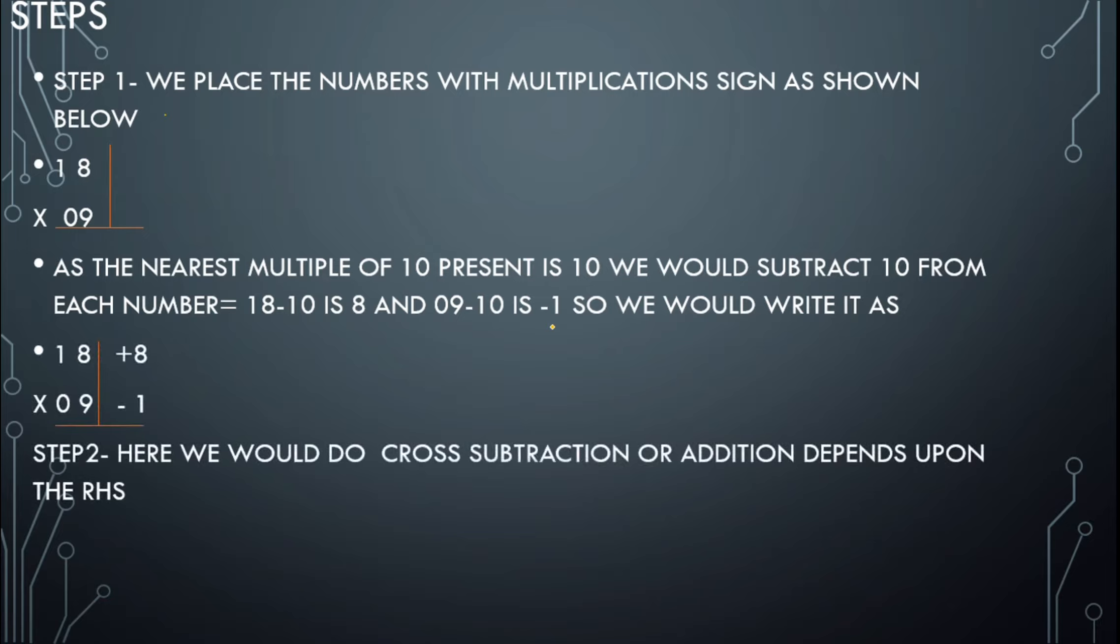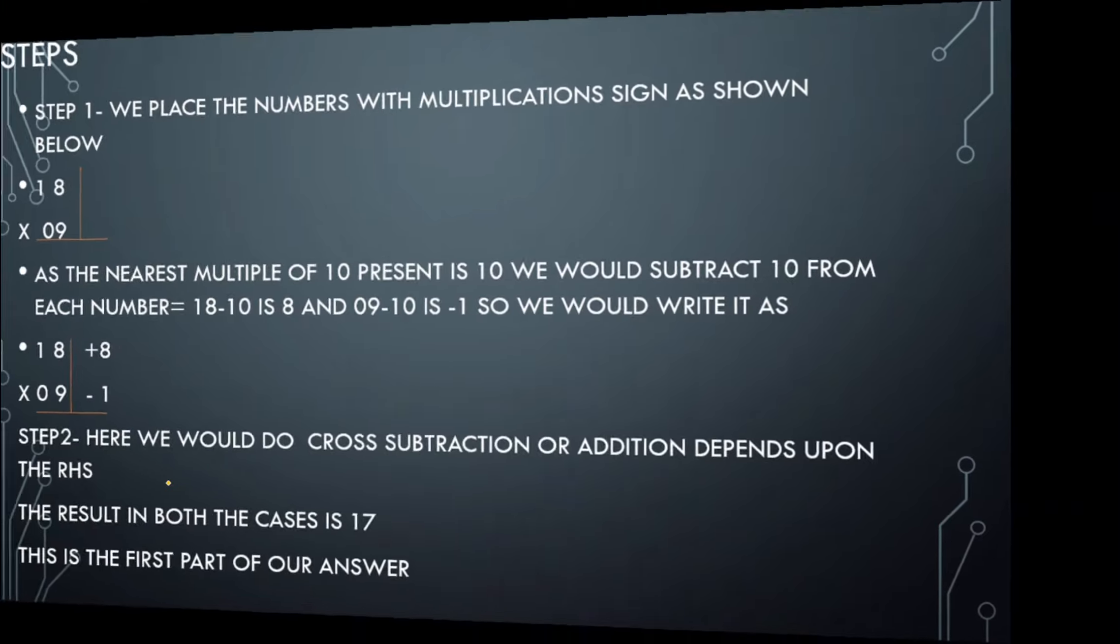Now step 2: Here we do cross subtraction or addition depending upon the right hand side. So 9 plus 8 equals 17, and 18 minus 1 is also equal to 17. The result in both cases is 17, so this is the first part of our answer. Now second part: Here we would do 8 into minus 1, which is equal to minus 8.